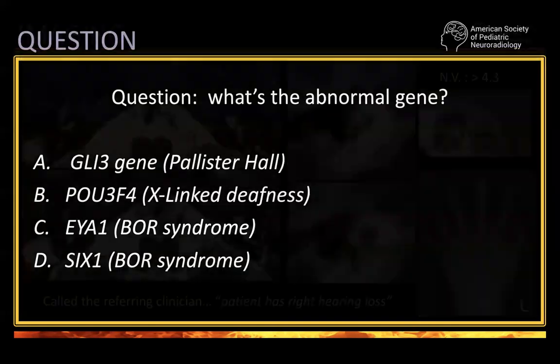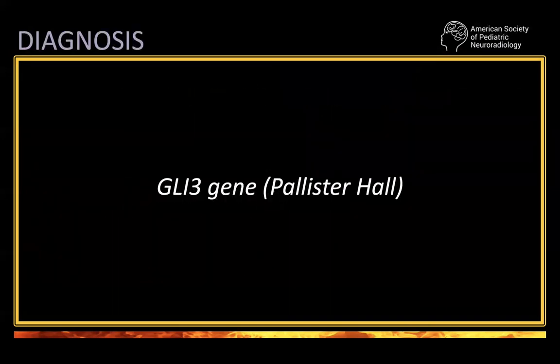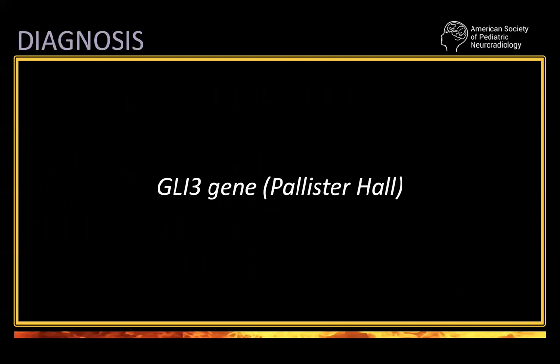My question: what's going on here? Is this Pallister-Hall syndrome — they have hypothalamic hamartoma due to the GLI3 gene? Is it POU3F4 gene, so X-linked deafness — they also have hypothalamic abnormality? Or is this branchio-oto-renal syndrome due to EYA1 or SIX1? The answer is: this is actually a GLI3 gene — so Pallister-Hall syndrome.